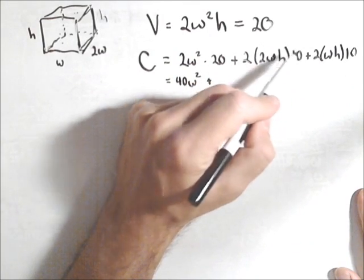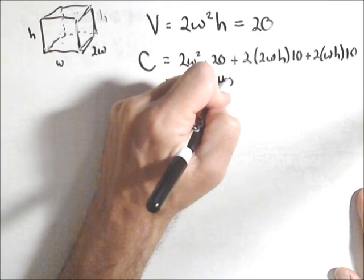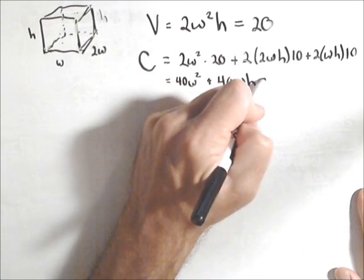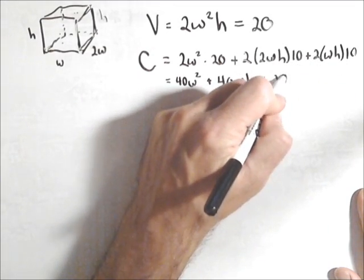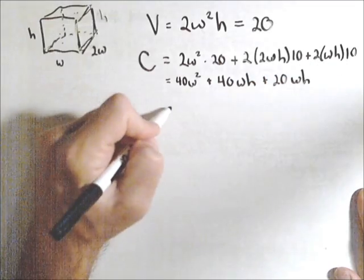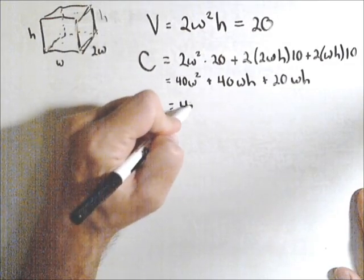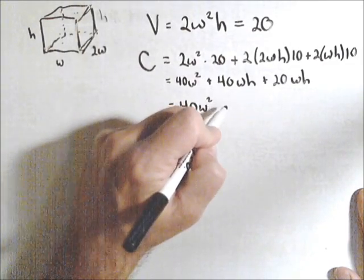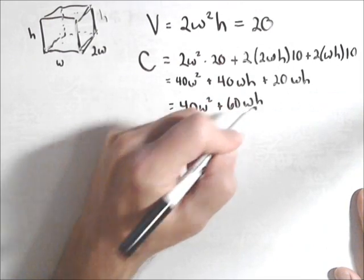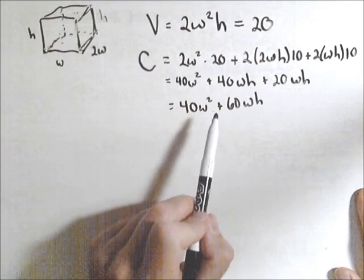Plus, 2 times 2 is 4, times 10 is 40. So 40wh plus 2 times 10. So plus another 20wh. So those can actually be combined to make this a little bit easier to deal with. 40w squared plus 60wh.